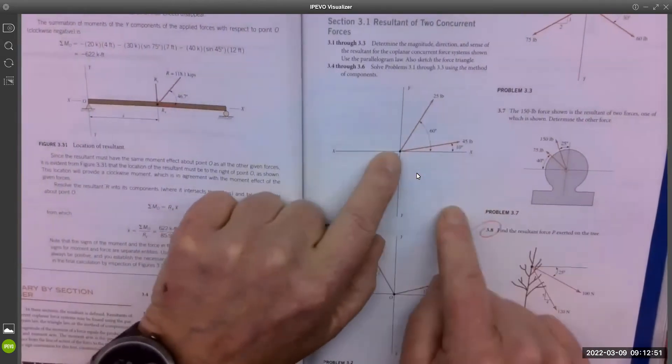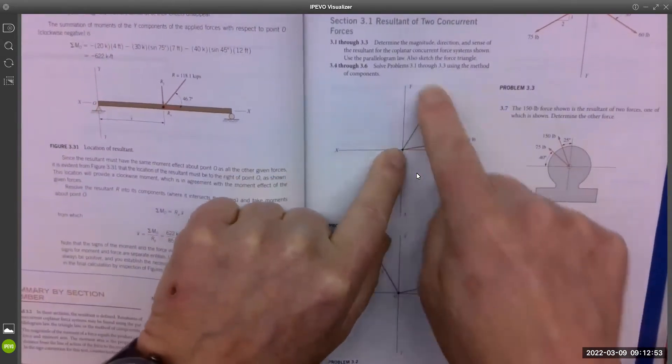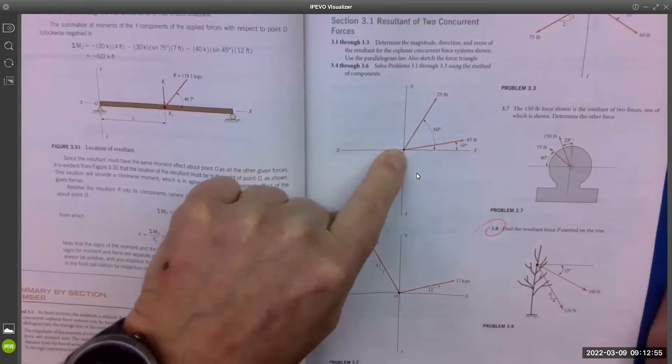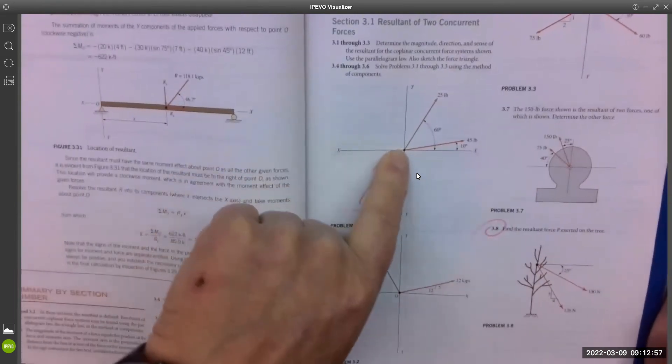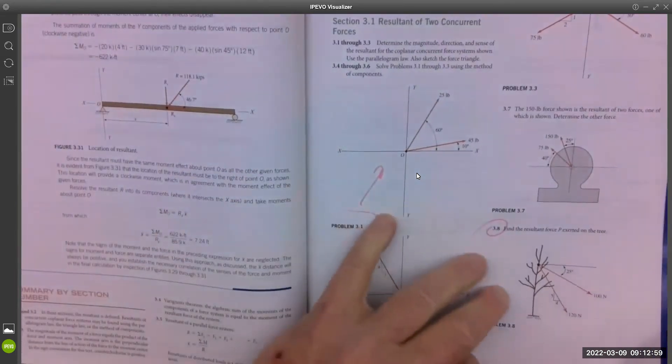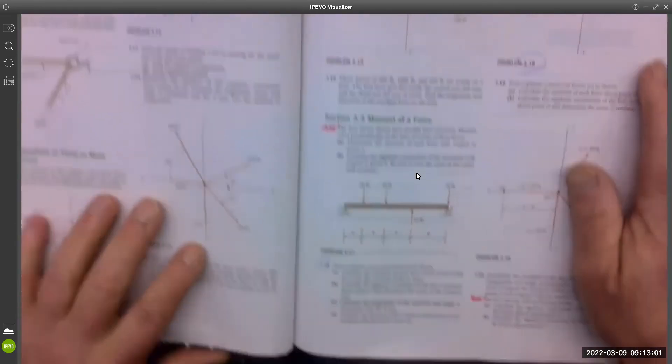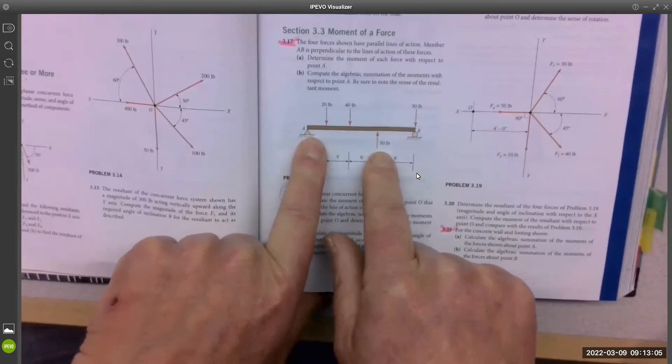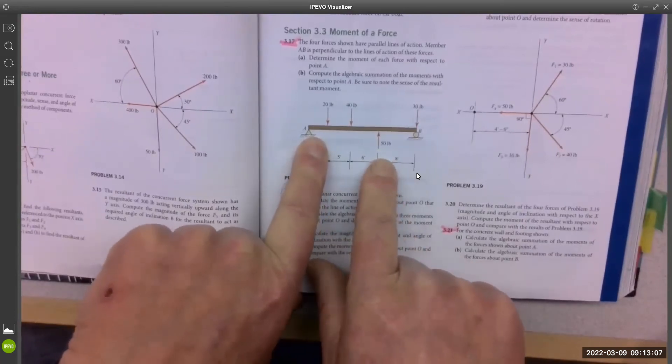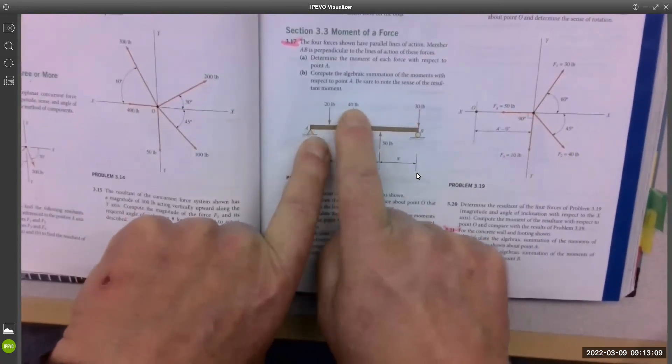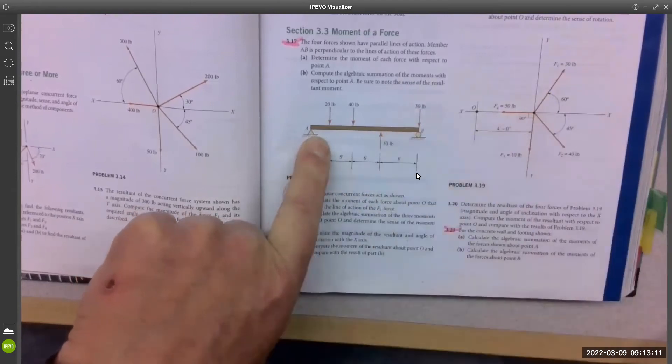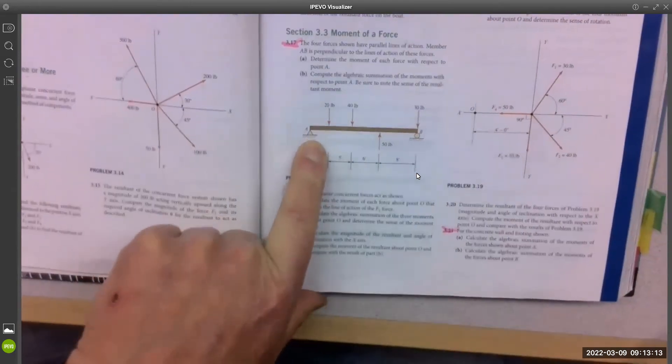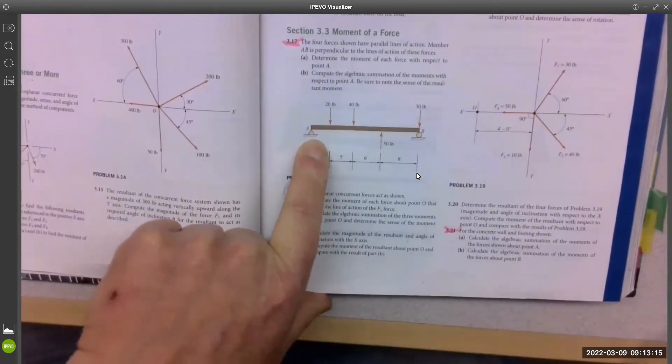So resultants of non-parallel or concurrent. So that was just this and combining the 25 and the 45 into a resultant. So they can start to look like beam problems, right? But if I say solve for the resultant, you just work with the 50, 20, 40, and the 30 to turn it into one force and where it is on the beam.